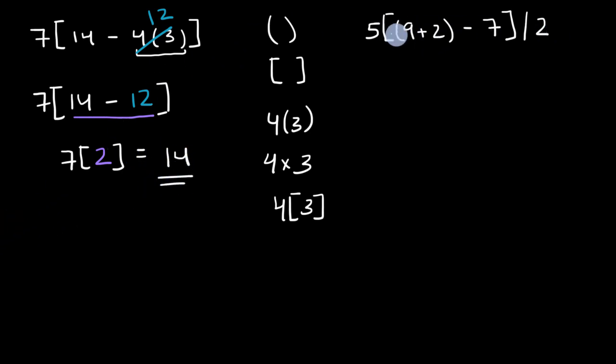Let's move over to this one right over here. So the first thing my brain wants to do is say, let's go into this inner parentheses right over here. Nine plus two is of course equal to 11. So this whole thing will simplify to five times 11 minus seven, and then divided by two.